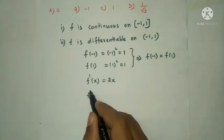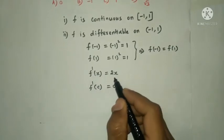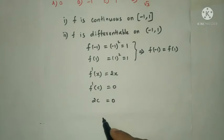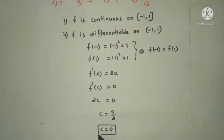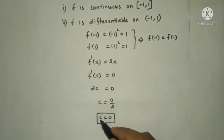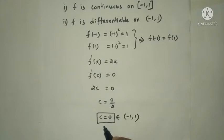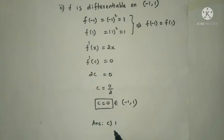Now f'(x) = 2x, and setting f'(c) = 0 gives c = 0. This value c = 0 belongs to the open interval (-1, 1). The Rolle's constant is 0, but seeing the answer options, the Rolle's theorem constant here is c = 0, so the answer is option C — the answer is 1. Wait, option C is the answer: 1 corresponds to option C.